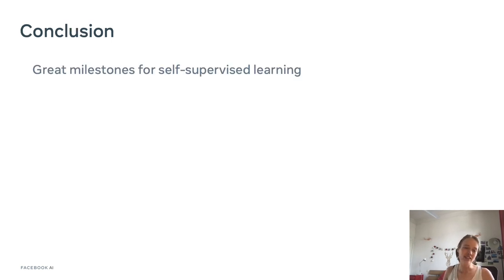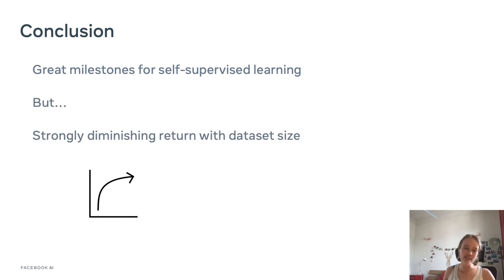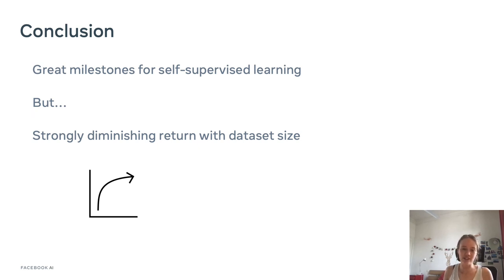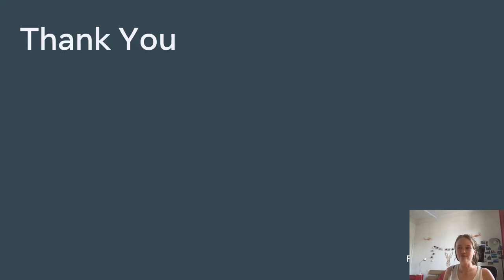Being able to train on billions of images from the internet without any supervision and learn rich features from this is a great milestone for self-supervised learning and large-scale AI in general. However, we observed a strongly diminishing return with dataset size — we expected self-supervised learning to scale better when adding more data, but while the model improves, the returns diminish. This suggests there is still room for improvement in future work. Thank you for your attention.